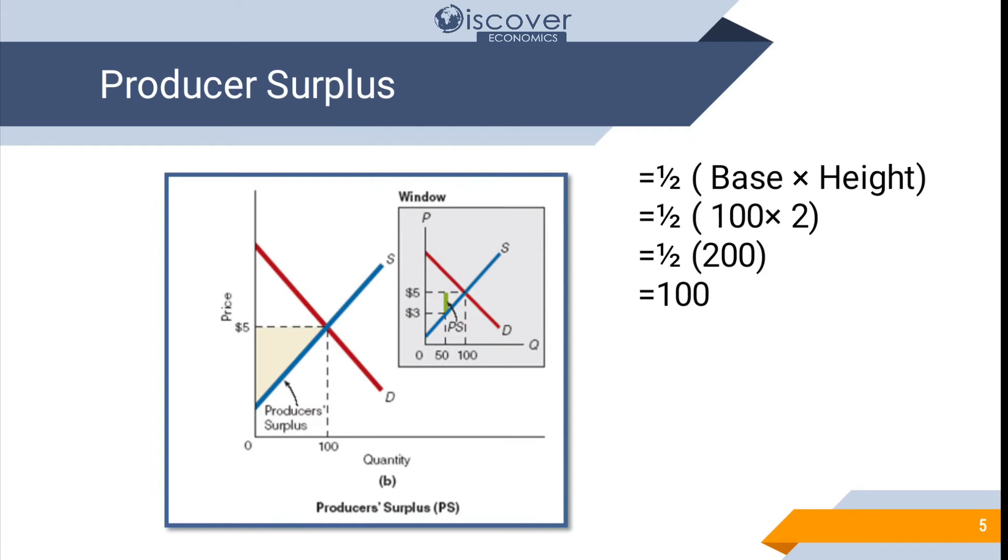Now look at this diagram here again. We have demand supply and we are having equilibrium at 100 and the price is 5. Now look at the window diagram. In the window diagram you can see that we had in our mind that I am going to sell this product at $3 but actually was able to sell at $5. So 5 minus 3 will be 2. So 2 is the difference that we are having and the total base as we already know that is 100.